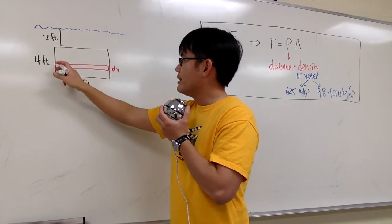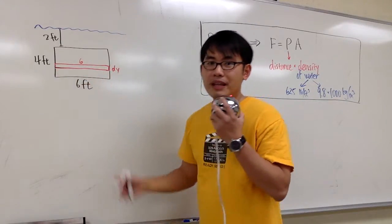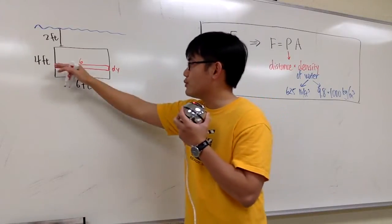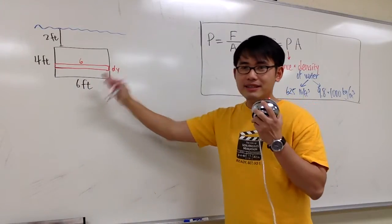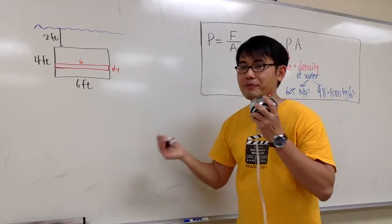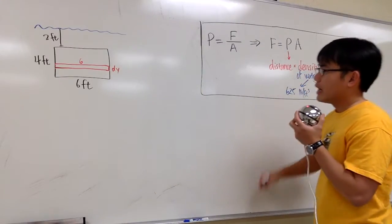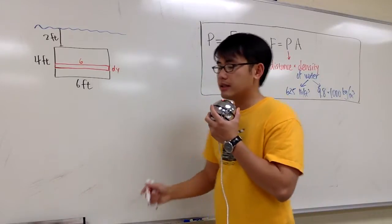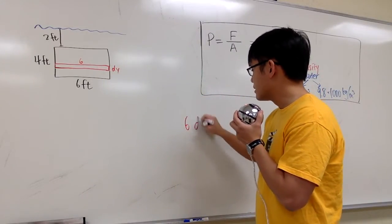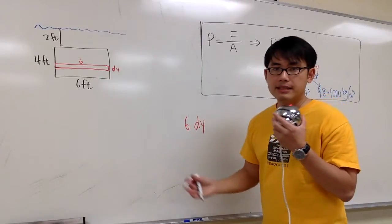Well, this right here, it's always 6 feet. It never changes, right? Because it's always rectangular. So that's why I said this is pretty easy, because we have a rectangle. There's not much labeling that we have to do. So for the area, for this rectangular slice, it's going to be 6 times dy. That's it.